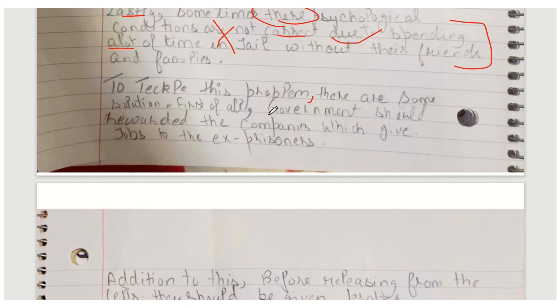To tackle this problem, there are some solutions. First of all, the government — 'government' starts with lowercase 'g' — should reward companies which give jobs to ex-prisoners. The question is: what will this achieve? If someone who committed a crime comes out of jail, you give them a job in your company — but why create a threat for the rest? You need to justify this properly.